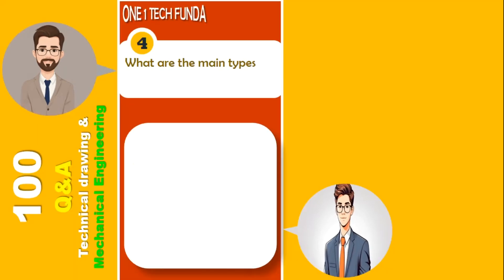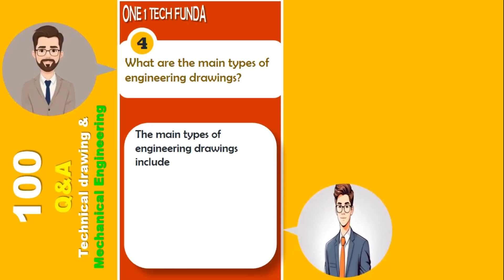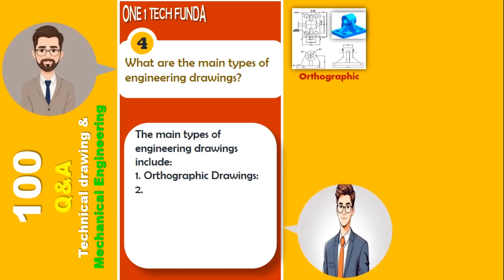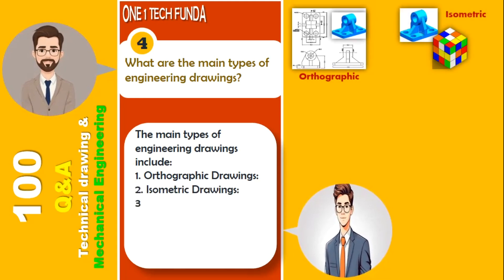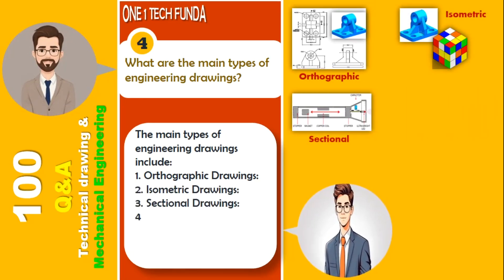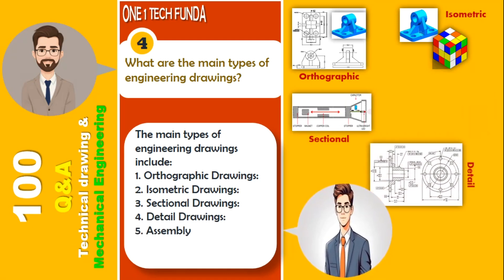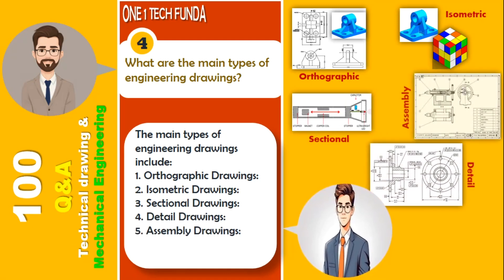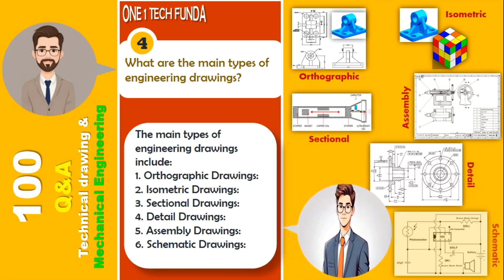What are the main types of engineering drawings? The main types of engineering drawings include: 1. Orthographic drawings, 2. Isometric drawings, 3. Sectional drawings, 4. Detail drawings, 5. Assembly drawings, 6. Schematic drawings, 7. Fabrication drawings.